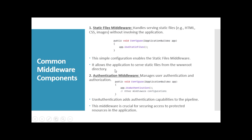Number two is the authentication middleware, which manages user authentication and authorization. You can simply use app.UseAuthentication in the middleware pipeline to add this middleware. UseAuthentication adds authentication capability to the pipeline and is crucial for securing access to protected resources in the application.